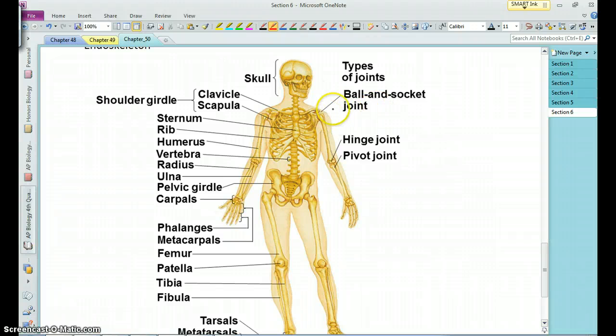You have your ball and socket joints, ones that like your arm or your hip, where you can move that limb in basically a rotational pattern. You have hinge joints, like your elbow, where you move the joint in a single plane, or the joints in your finger.